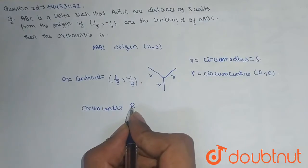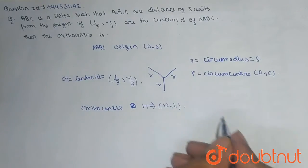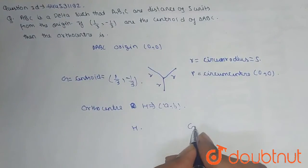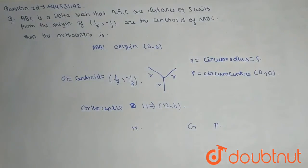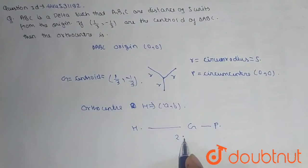Orthocenter H is equal to (A, B). So we know the relationship between H, G, and P, where H is orthocenter, G is centroid, and P is circumcenter. The ratio between these three is 2:1.